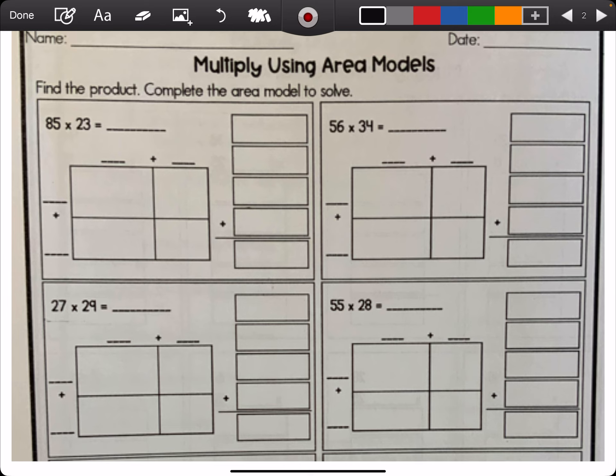So we have 85 times 23. When we're doing 85 times 23, we have been working on breaking apart our numbers. So I'm going to break apart 85 into 80 plus 5, and then 23 into 20 plus 3. Now you're going to look and we're going to find out what is going inside of each of these four partial products. And then we're going to put each product inside each of the four boxes, and then we're going to add them.